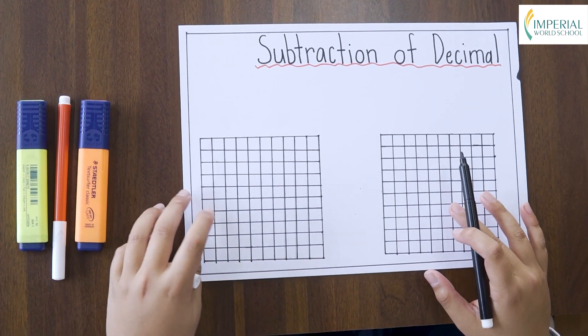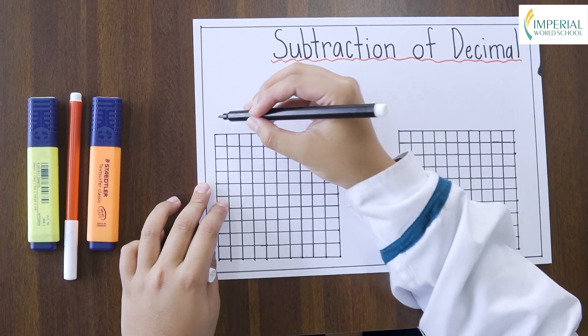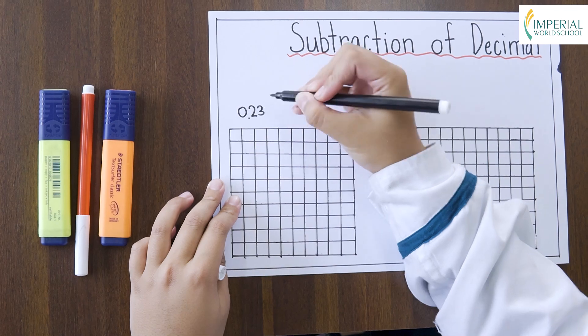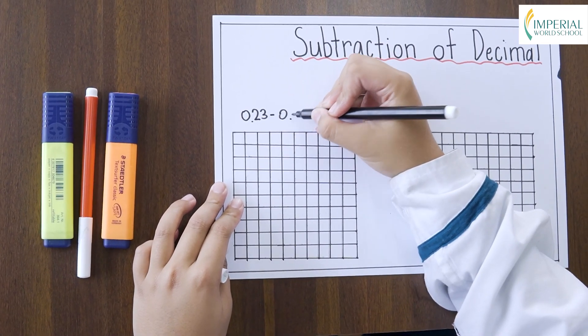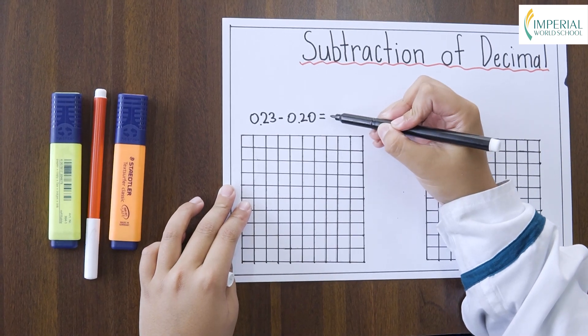Subtraction of decimals is a really simple and easy topic and I will be showing you how to do the method and how to subtract the decimal points. Now let's take an example, for example, an example of the decimal numbers is 0.23 minus 0.20 and I will have to find the difference.